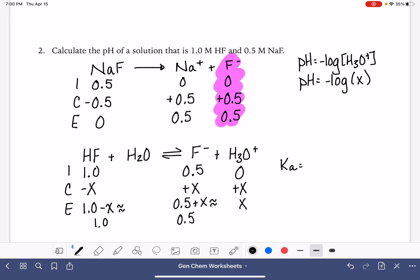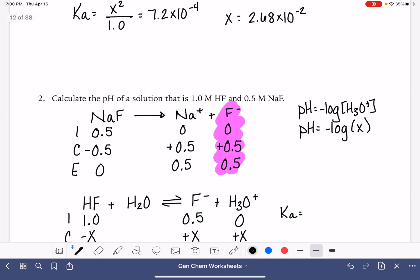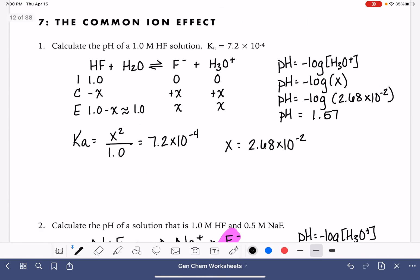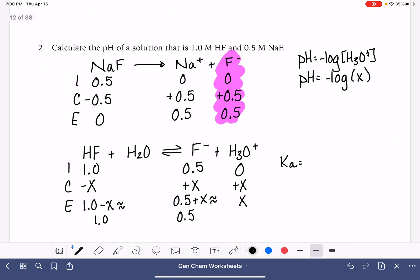We are going to use, just like normal, an equilibrium expression. Our Ka value is 7.2 times 10 to the minus 4. Ka value doesn't change. 7.2 times 10 to the minus 4. And that is going to be our products, which are X and 0.5 divided by our reactant, which is 1.